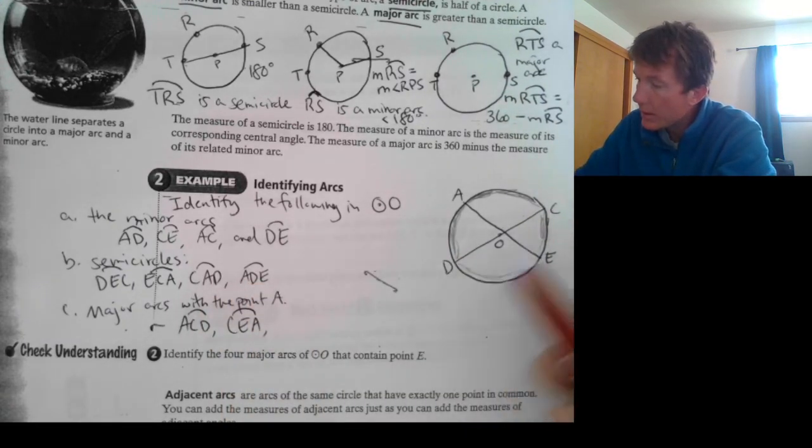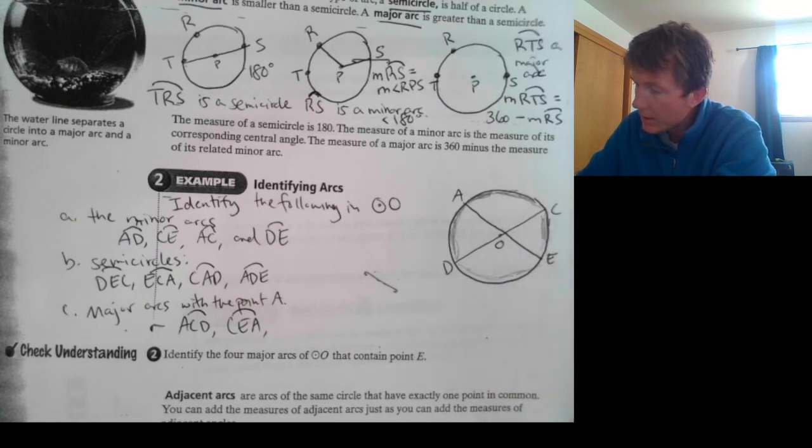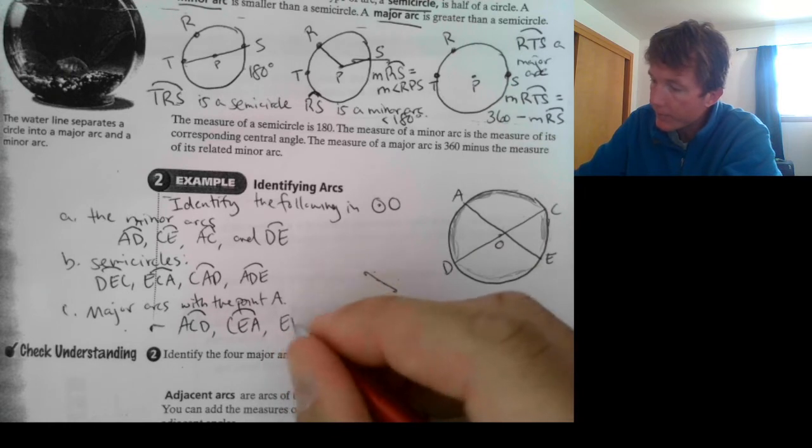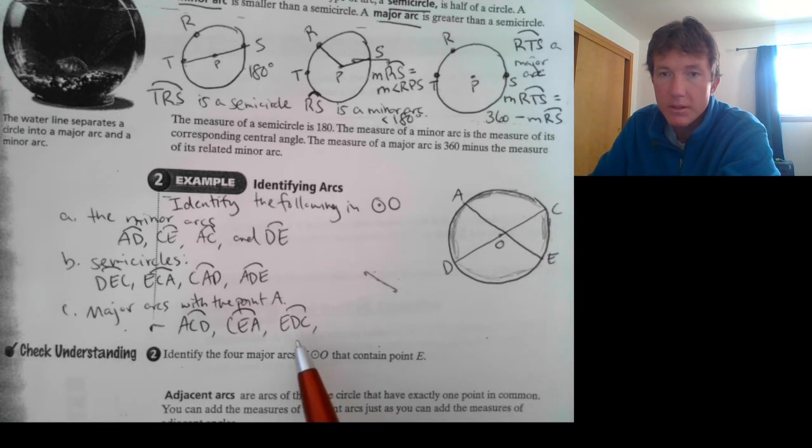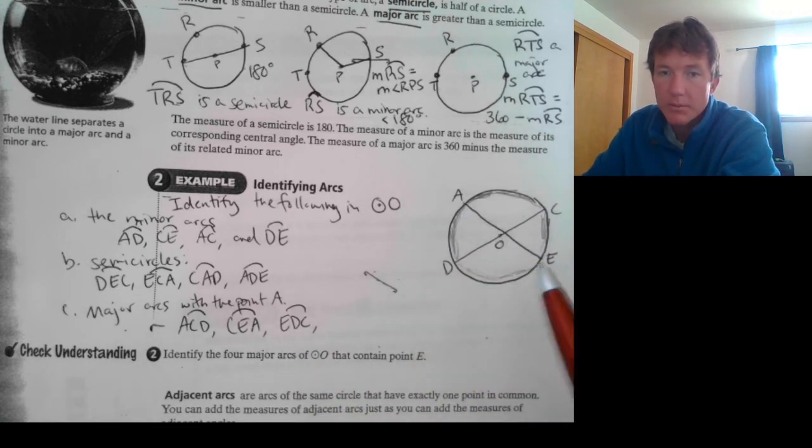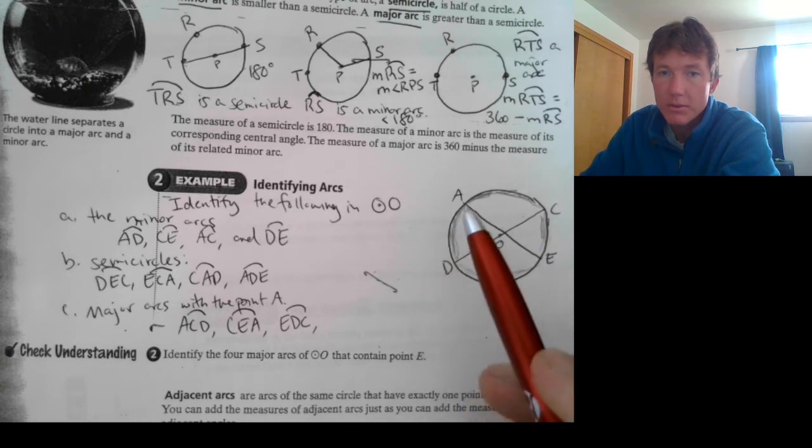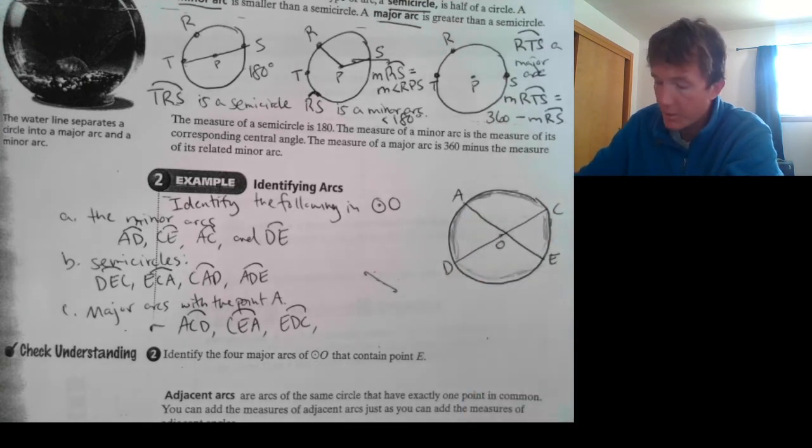EDC. EDC would be another. Notice how the letter, the point A is not in the actual name of the major arc. However, it still contains that point, since going from E, D, C, we're skipping over. We're still including it. We're just not naming it. It's still part of the arc.